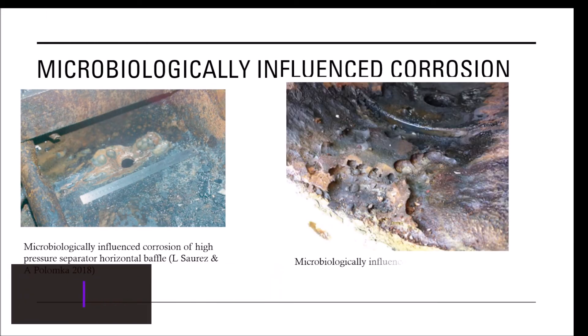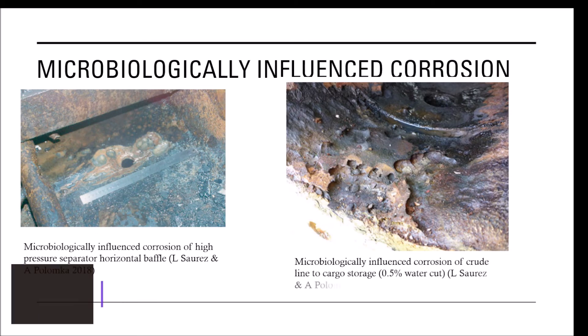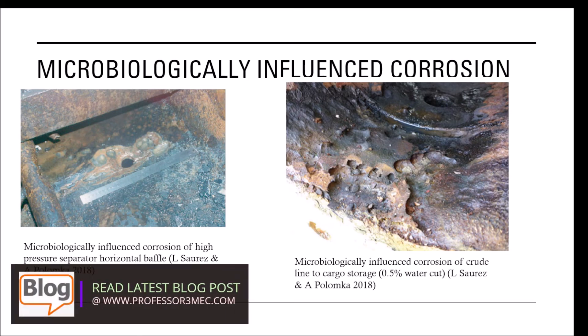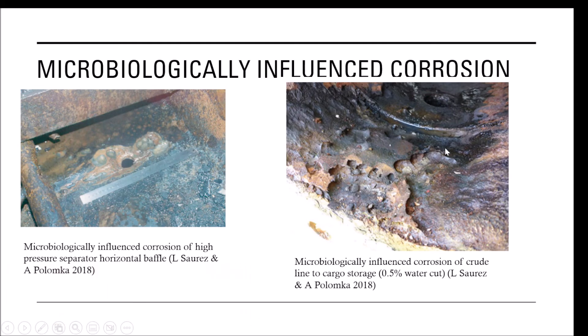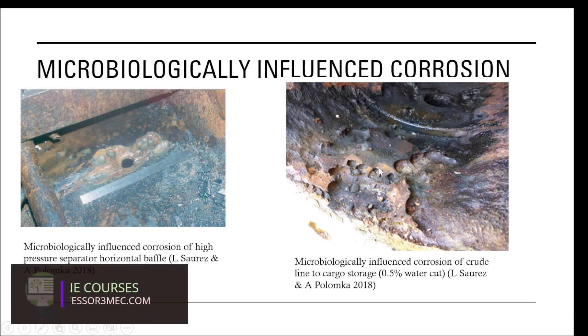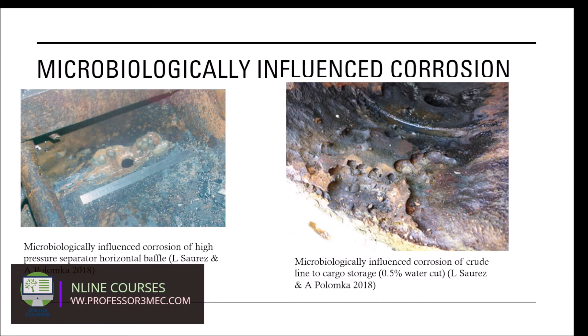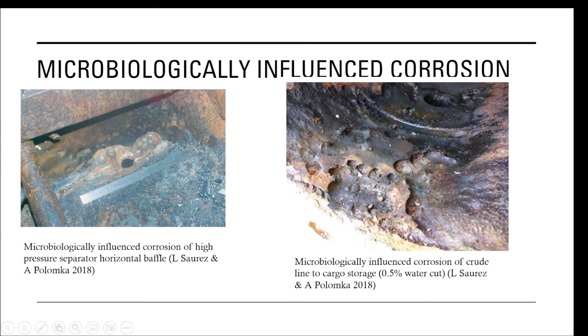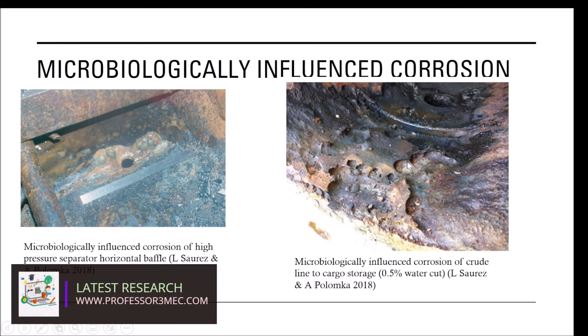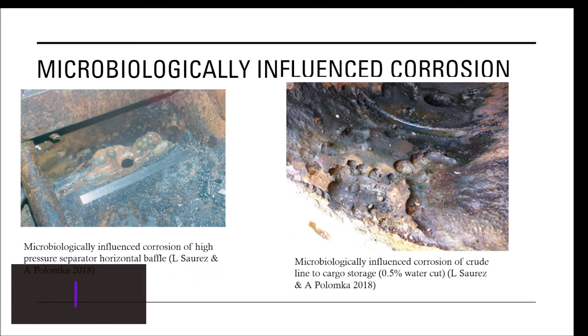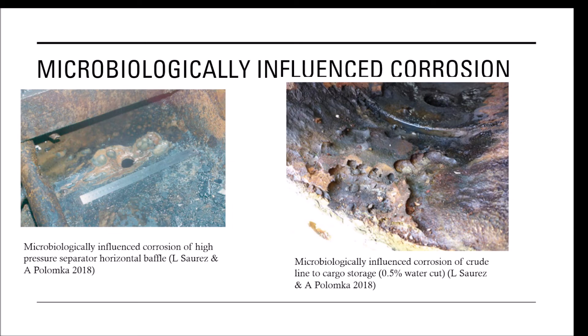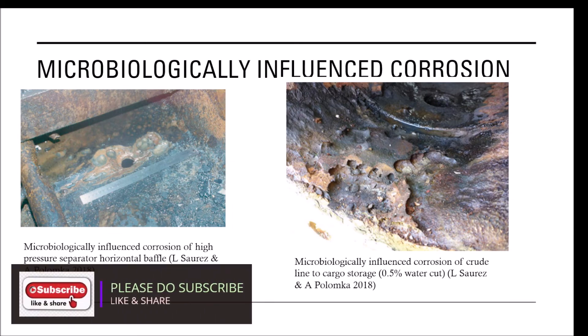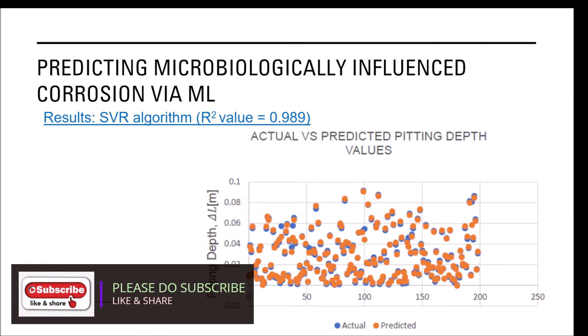Here's another example of MIC of crude line to cargo storage. It was having about 5% water cut, so again you can see a lot of pits and corrosion due to the corrosion, and a lot of degradation is happening due to MIC. So you can now really realize that a lot of pitting happens due to this kind of corrosion, although it can be uniform corrosion as well. These pits are more deadly than uniform corrosion. So when you assess using API 579 or any other design code, you have to assess for those pits as well.